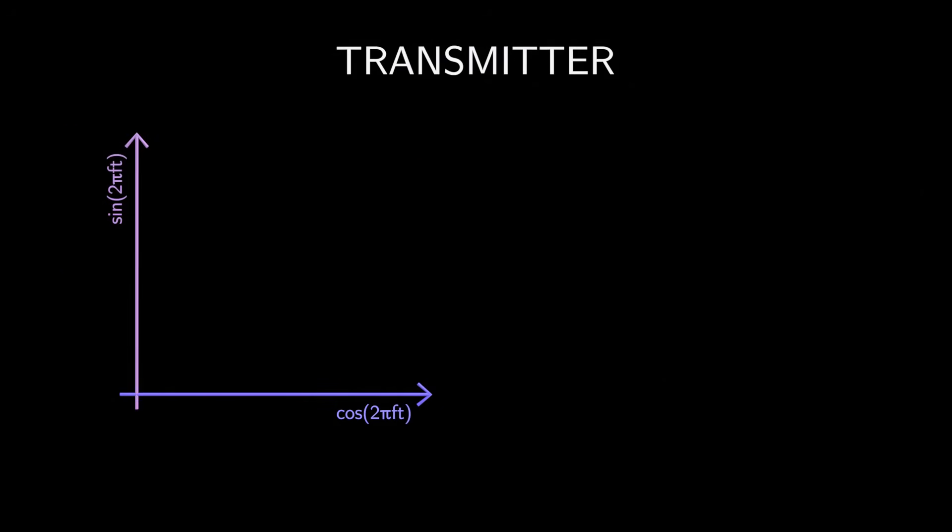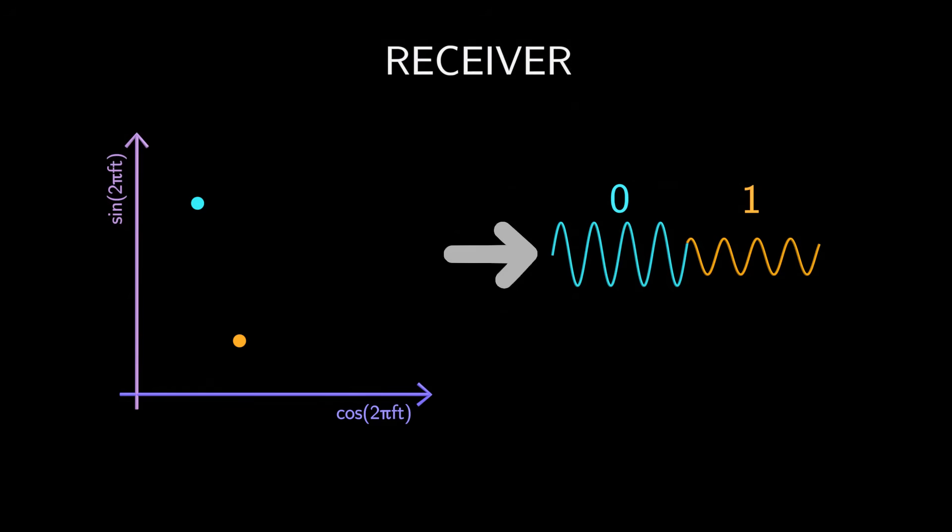Let's consider a simple transmitter setup. Suppose we represent bit 0 as one point and bit 1 as another point in the constellation, and we transmit that. When the receiver gets this signal, it needs to map it back to the corresponding points on the signal constellation.